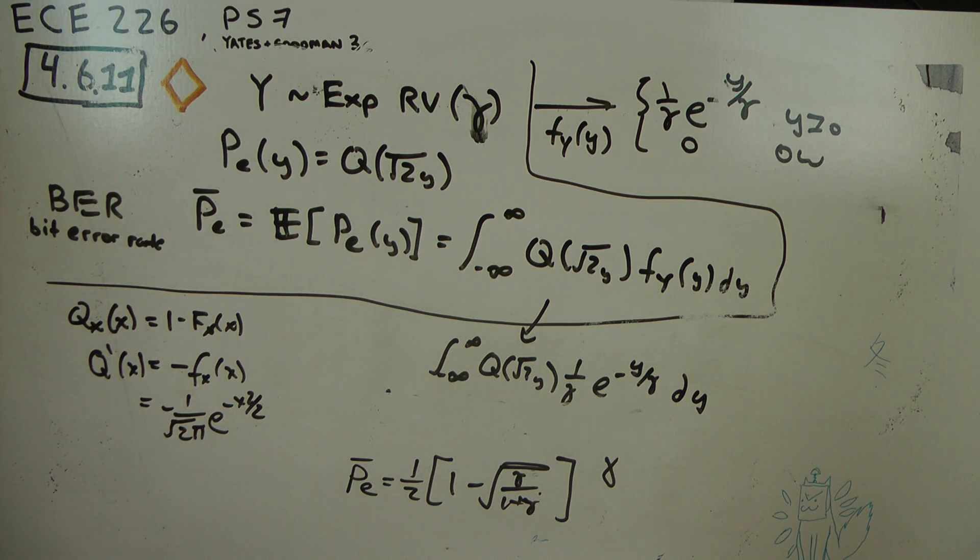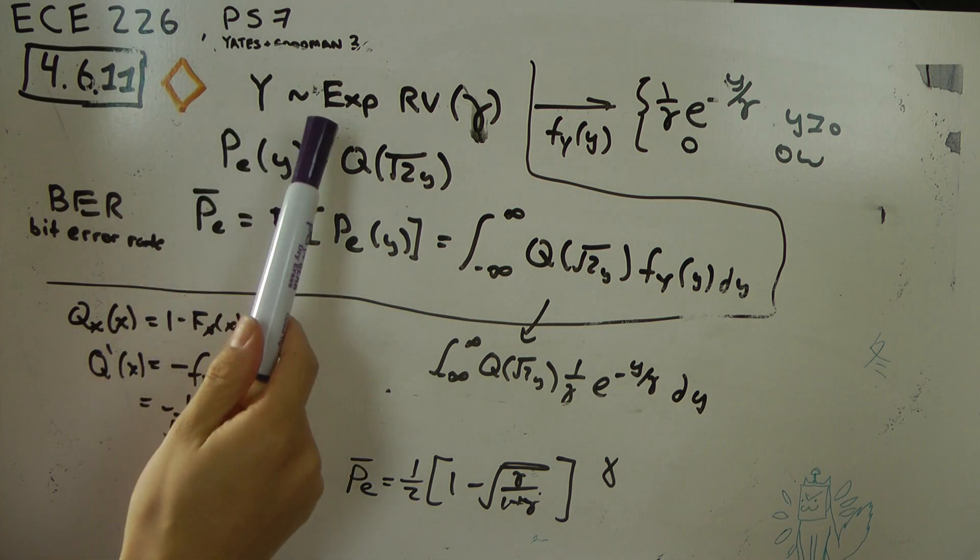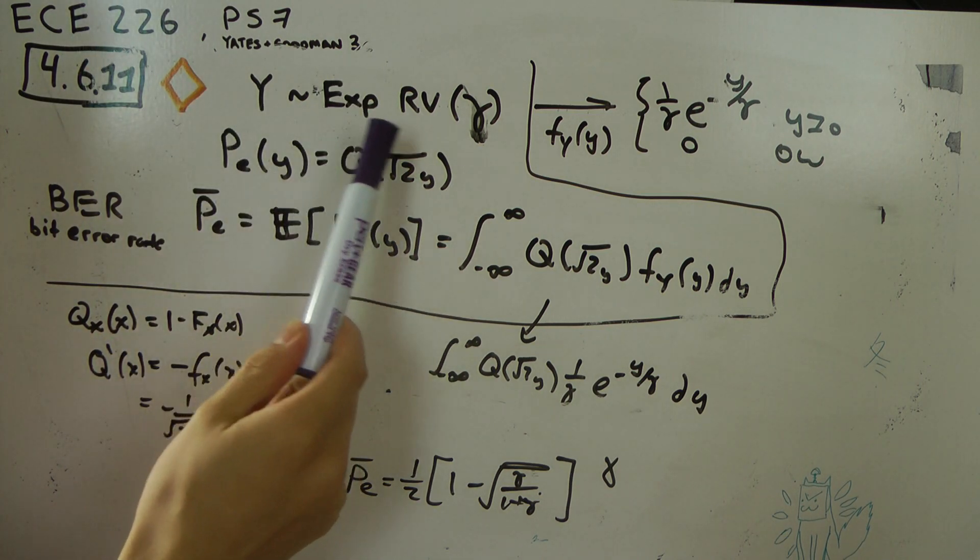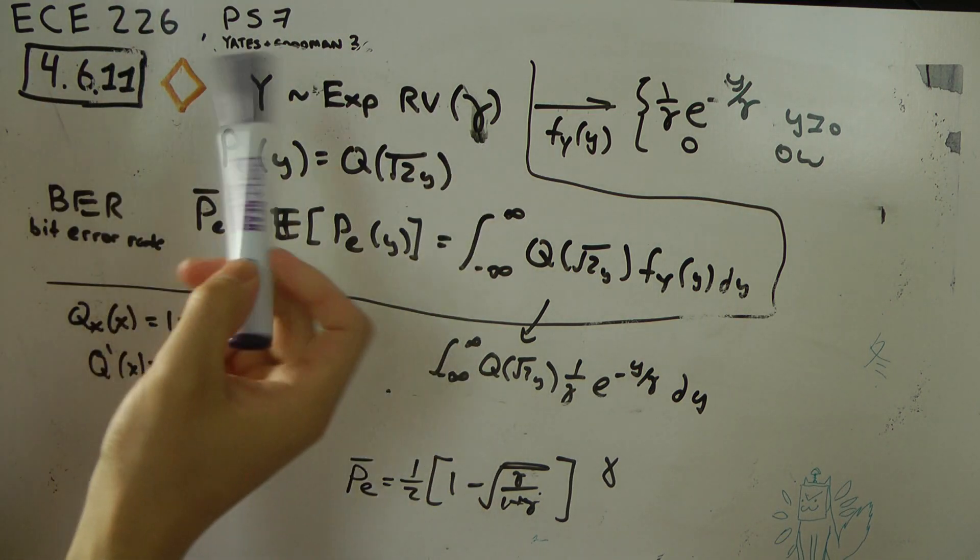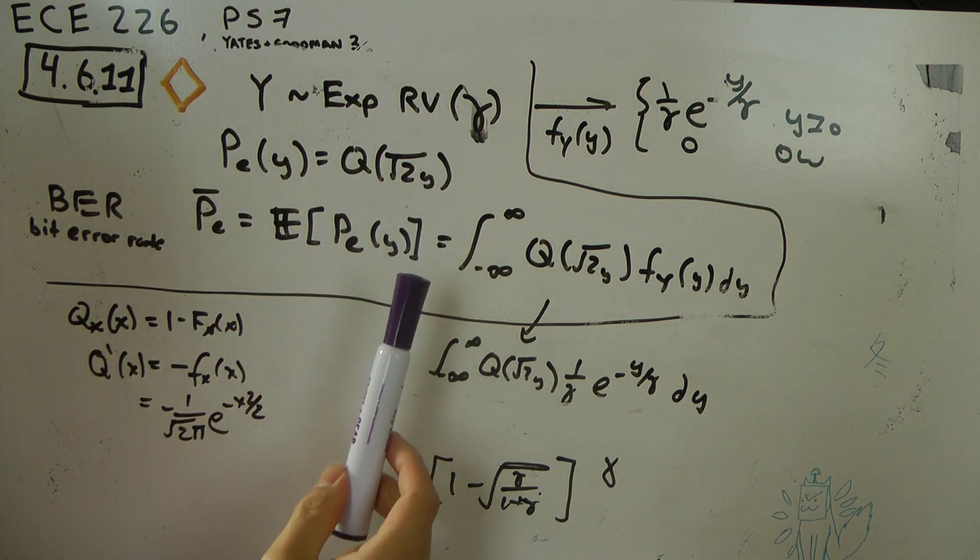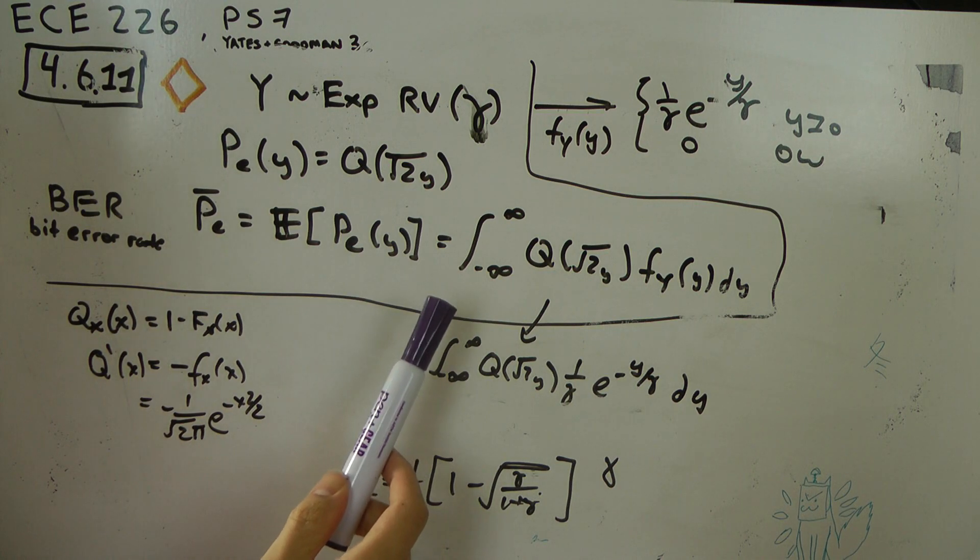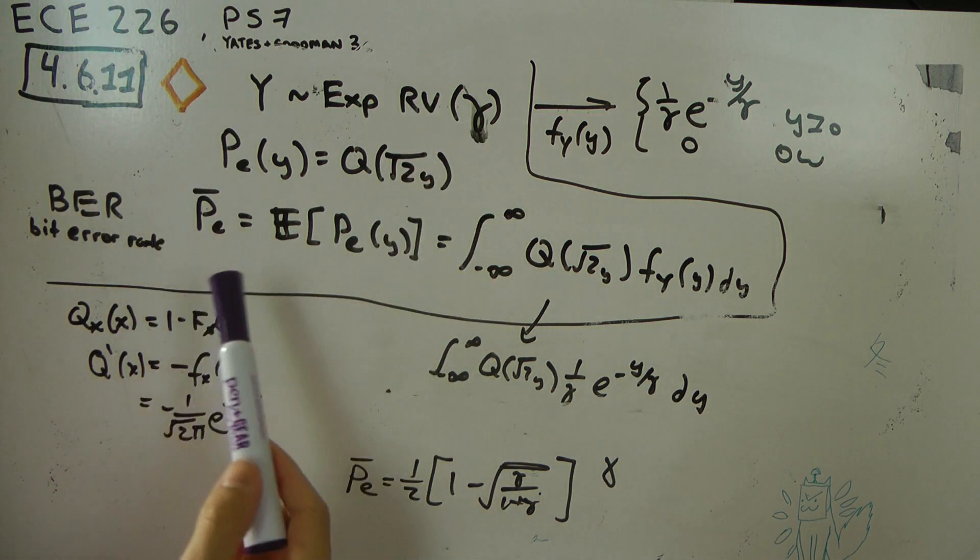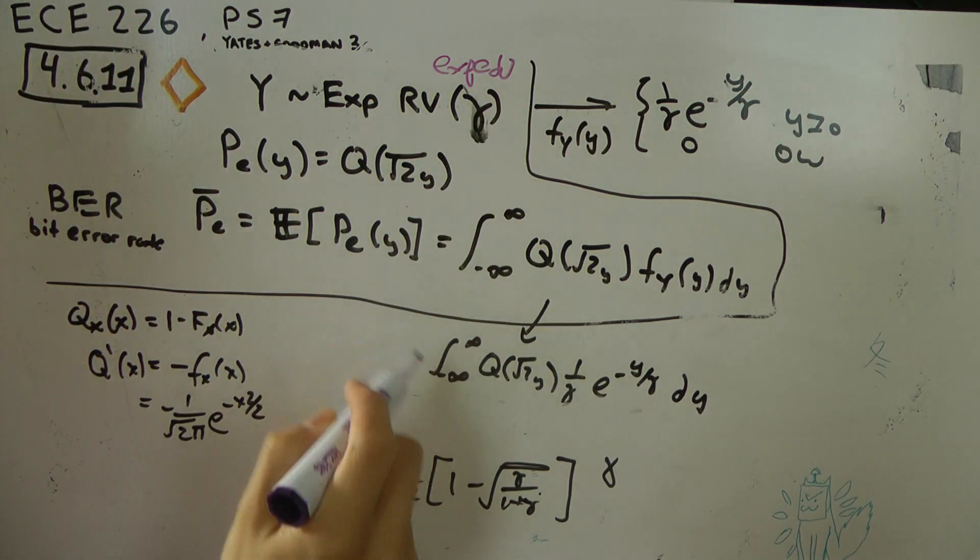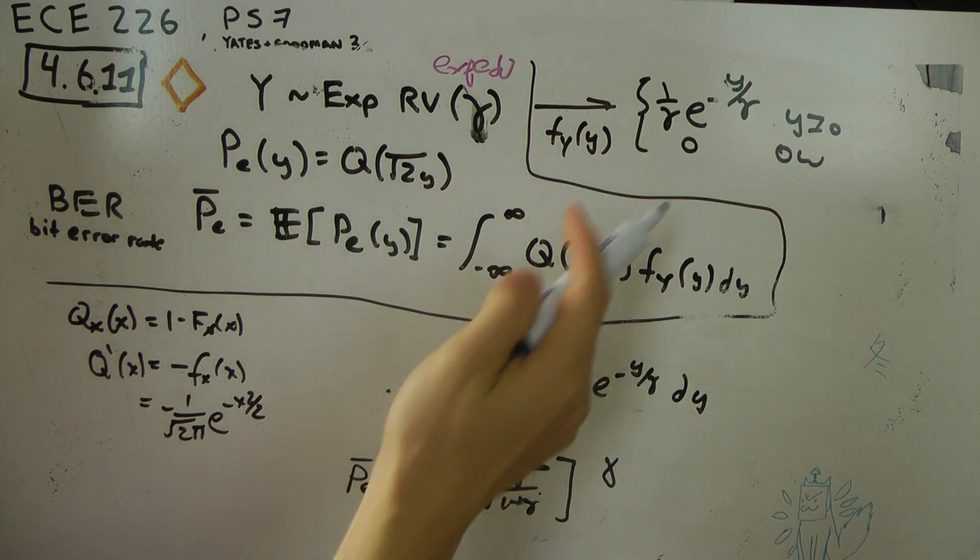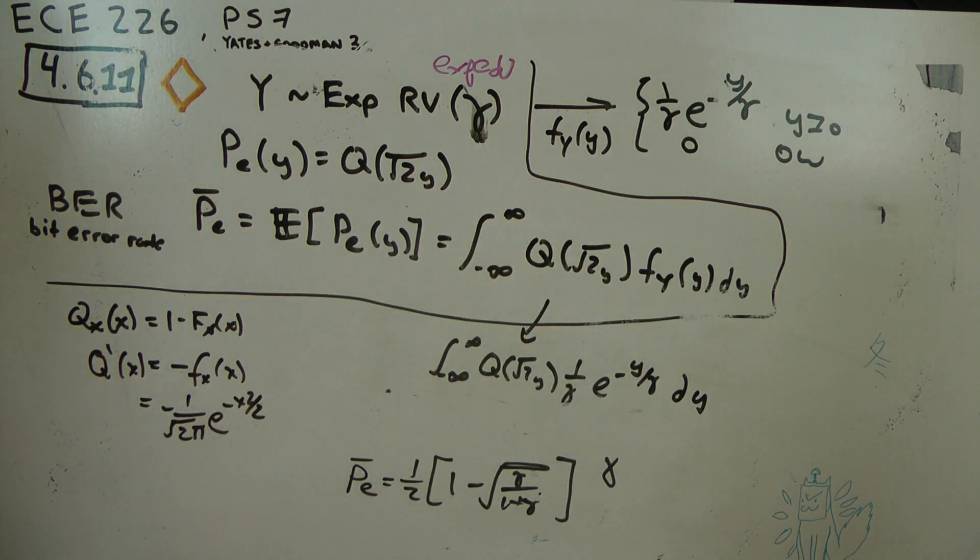We're given a signal-to-noise ratio, which is represented as Y. It follows an exponential random variable with the rate of gamma. Actually, no—the expected value is gamma, and then the rate will be 1 over gamma.